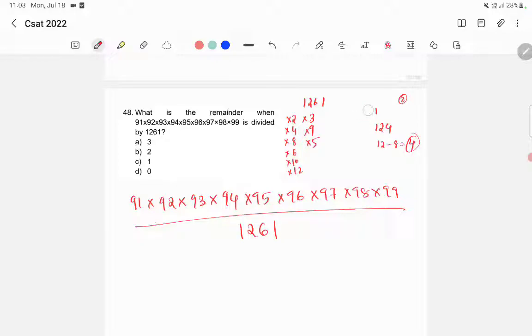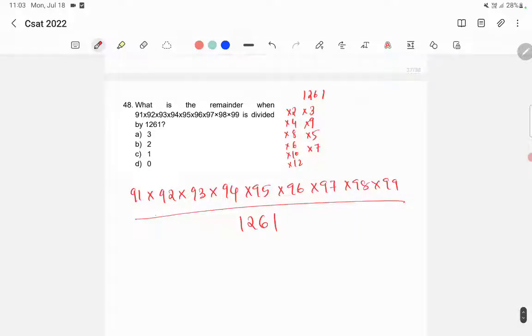Then 8 is not divisible, then 9 is also not divisible. Then we'll check 11. What is the divisibility rule of 11?